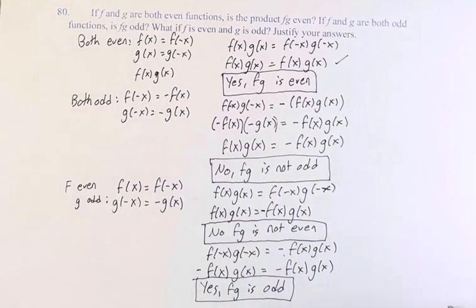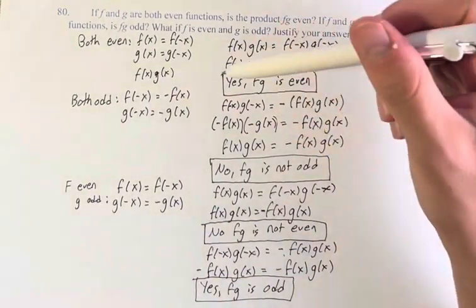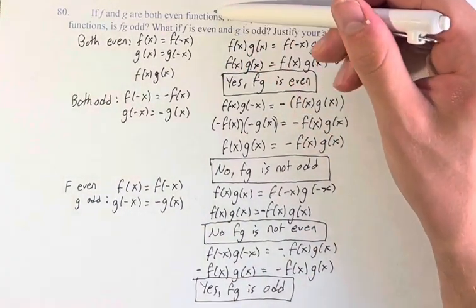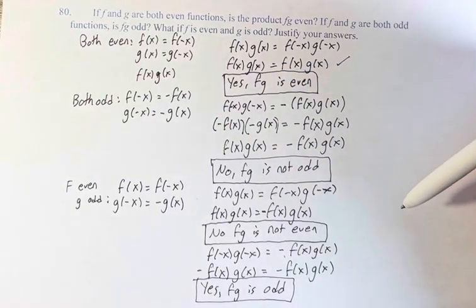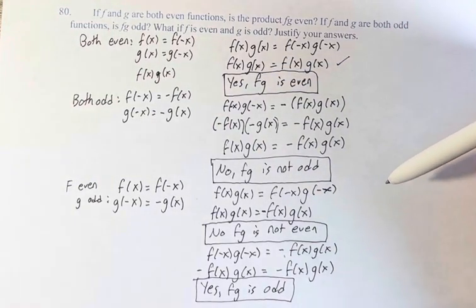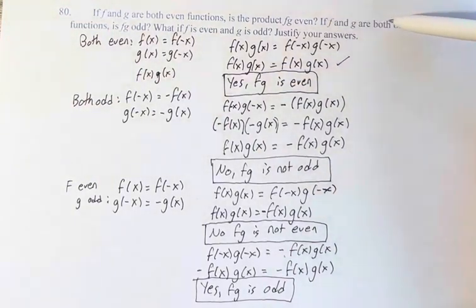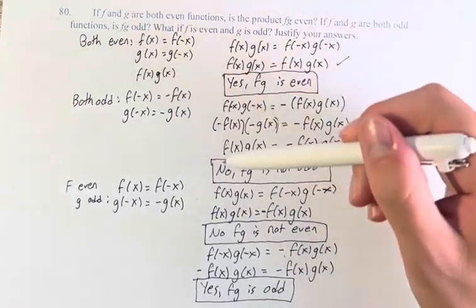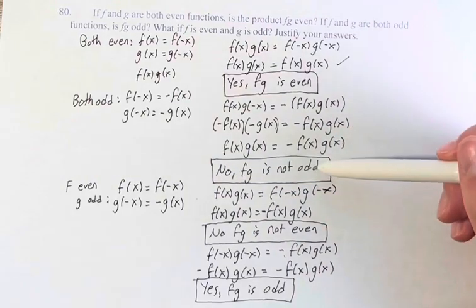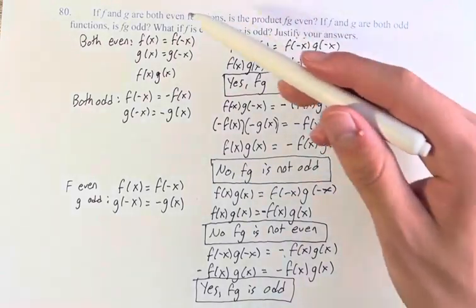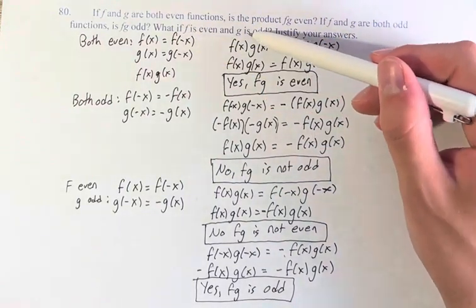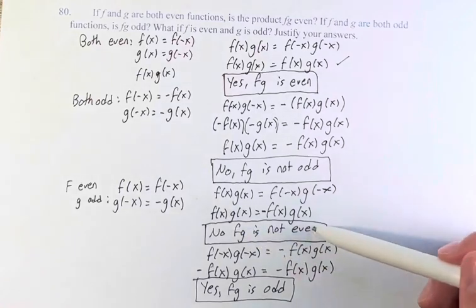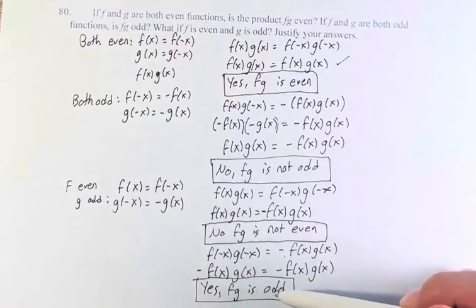Therefore, in conclusion: if f and g are both even functions, then the product fg is also even. However, if f and g are both odd functions, their product is not odd. However, if f is even and g is odd, then the product is not even, but it is odd.